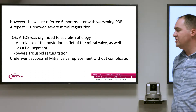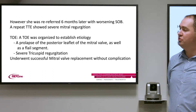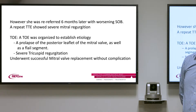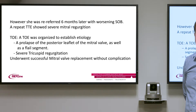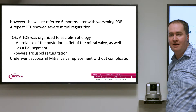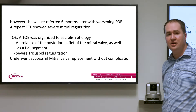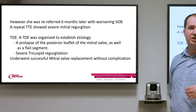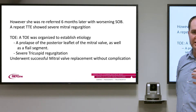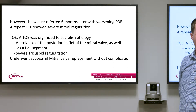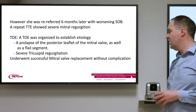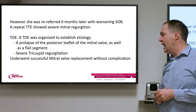The TOE also showed severe tricuspid regurgitation and pulmonary hypertension, which is not unusual with severe MR as pressures back up across the pulmonary capillary bed. The presence of both severe MR and tricuspid regurgitation is a marker of poor prognosis. The tricuspid regurgitation is functional — caused by dilatation of the right ventricle, which spreads the annulus so the leaflets can no longer coapt properly.